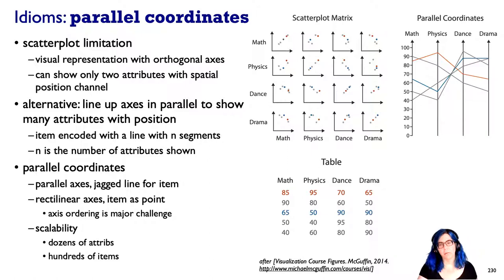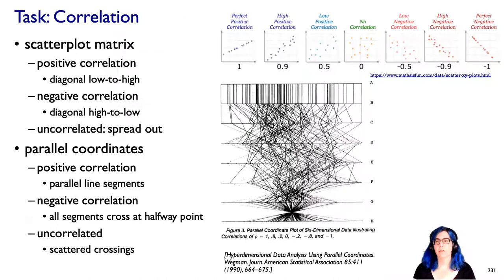From a scale point of view, we could fit dozens of attributes, not just 10 or 12, but we could actually have many of these lines going across and we could fit probably hundreds of these jagged lines representing items before we get too much clutter and over plotting. Now the challenge with parallel coordinates is what order should those axes be in? This is an intrinsic thing where it's easy to compare values between neighboring axes. Math and physics is easy, physics and dance is easy, dance and drama is easy, but math and drama gets to be much harder because there's all that visual stuff happening in between.